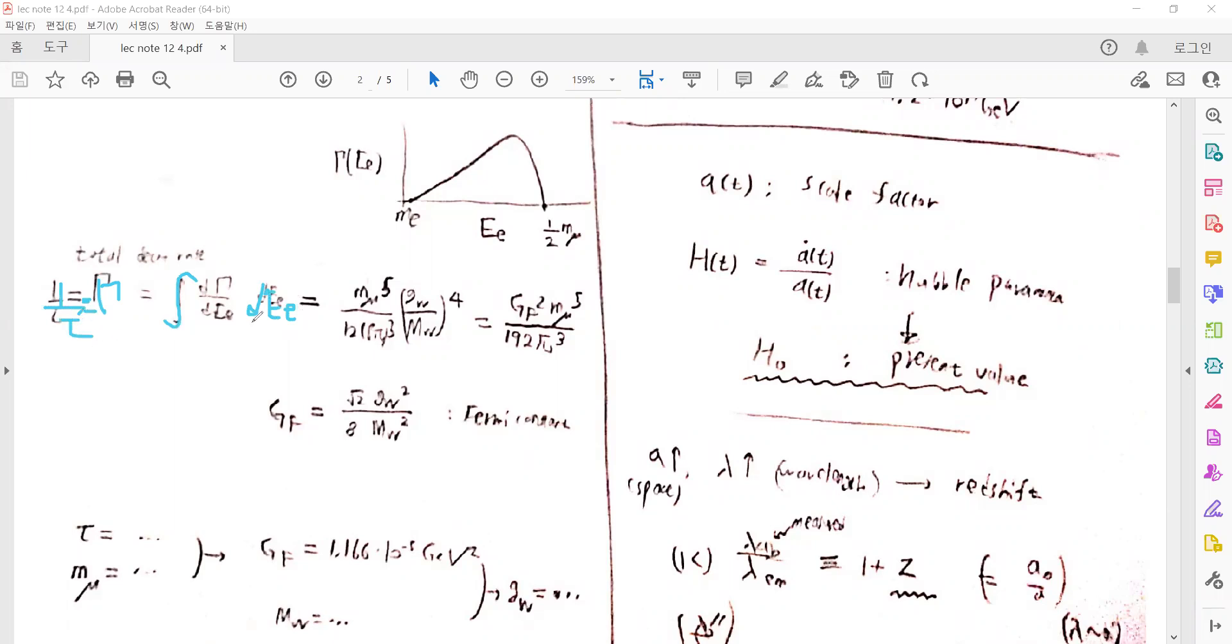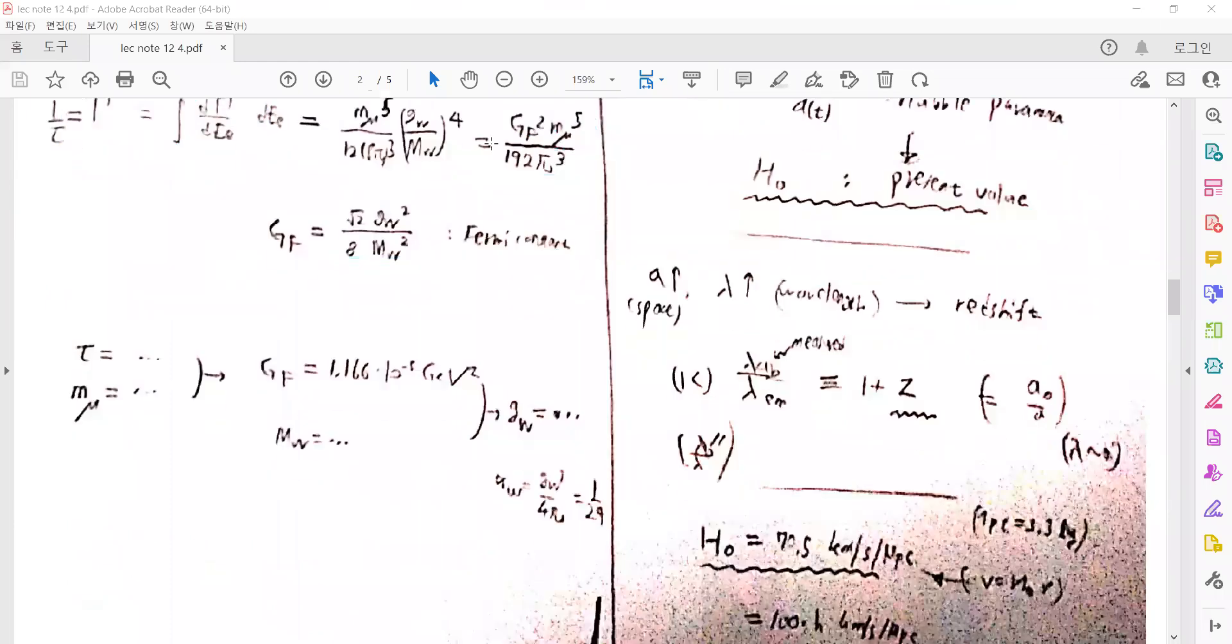We can obtain the total decay rate by integrating the differential decay rate over the energy of the electrons. The decay rate involves complicated algebra with coefficients involving the coupling constant and the mass of the W boson. It can be summarized using the Fermi constant and the mass of the muon.